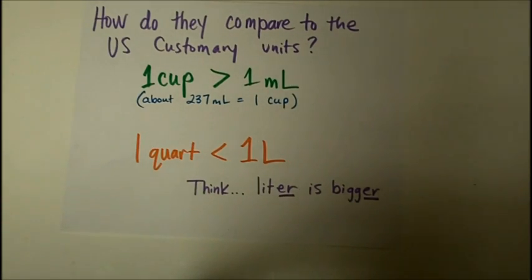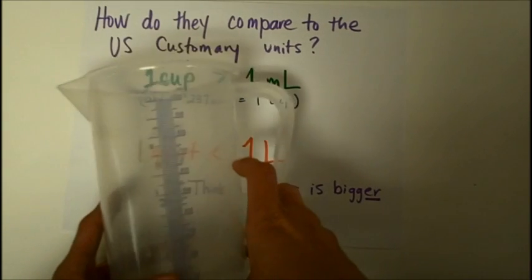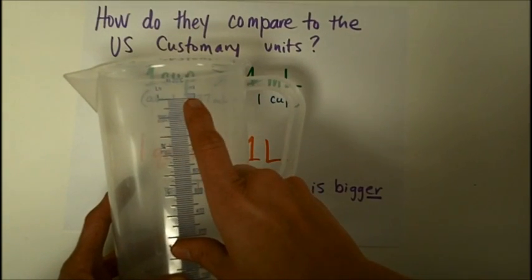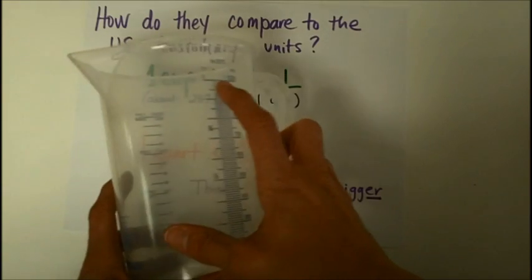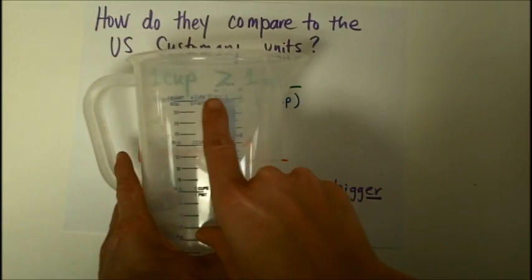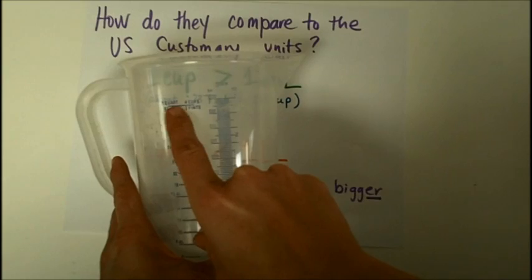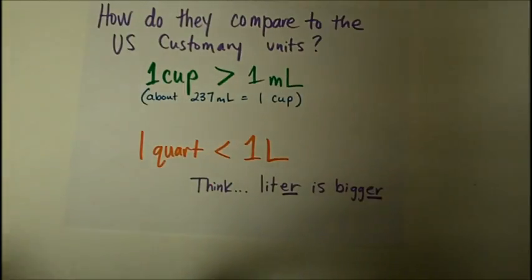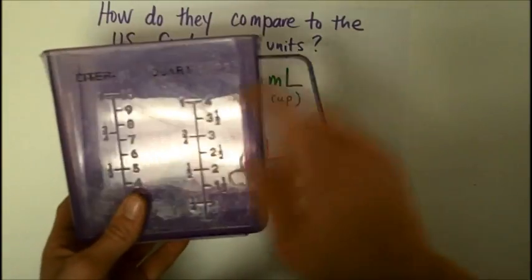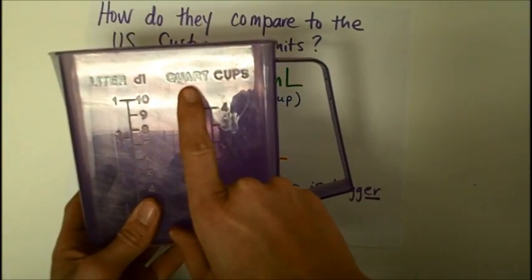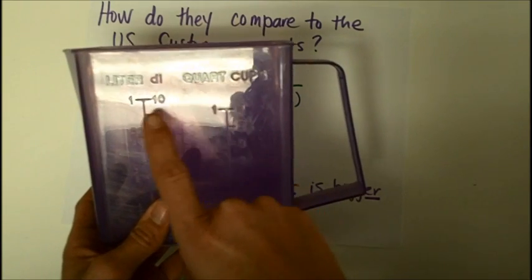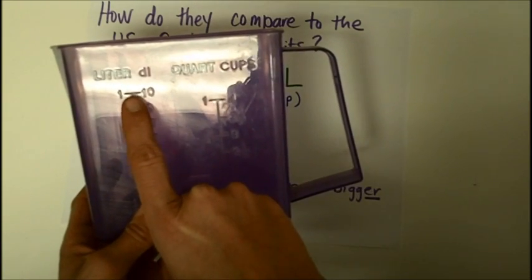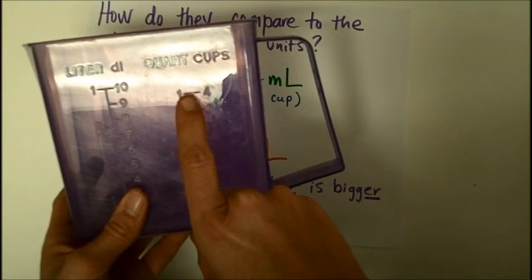When you think about a quart and a liter, they are really, really close together. Look at this container. On this side is measuring in milliliters. So this is the one liter. Turn around on the other side at almost the exact same spot, here's where it marks one quart. If you hold this up and look though, you can see that the liter is just a little bit bigger. Here's another example where it might be easier for you to see. This side is the liters, this side is the quart. And here you can see that the liter line is just a little bit higher than the quart line.